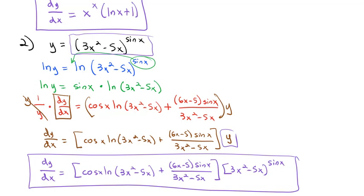So we've done three things today: we talked about the derivatives of the exponentials, specifically that d/dx of e to the x is e to the x; we talked about the derivatives of the logarithms, where the derivative of the natural log is 1 over x; and we talked about logarithmic differentiation to take problems that would otherwise be impossible and change their form so we can find the derivative. Take a look at the practice problems and we will see you in class to work on them further.